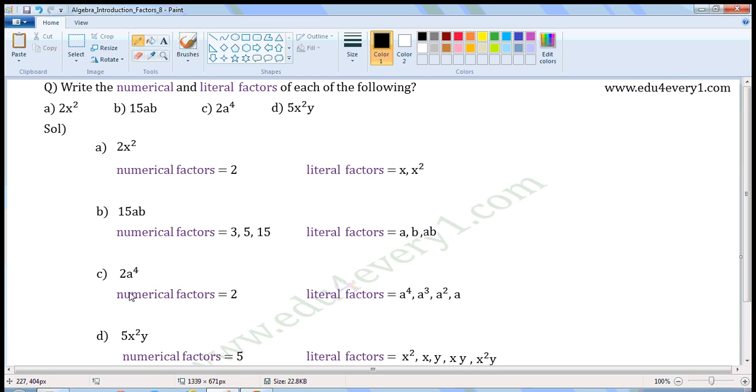Next one, 2a to the power of 4. In this, the numerical coefficient is 2. It is a prime number. So, numerical factors is equal to 2. Literal coefficient is a to the power of 4. Its factors are a to the power of 4, a to the power of 3, a to the power of 2, a.